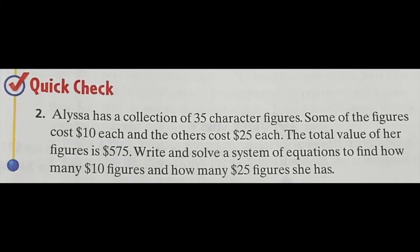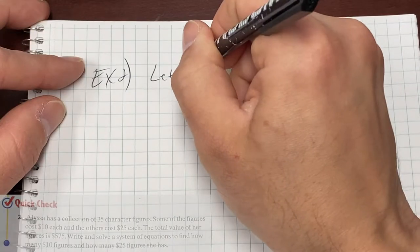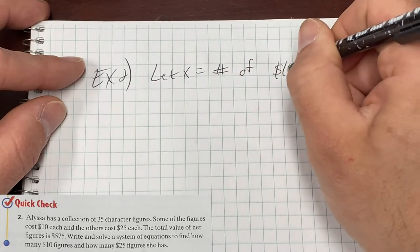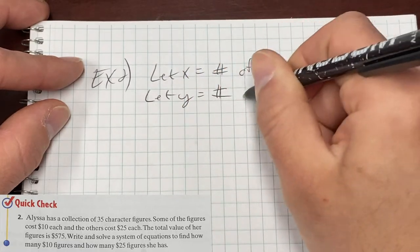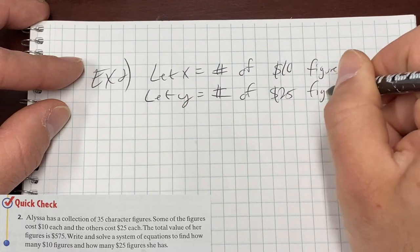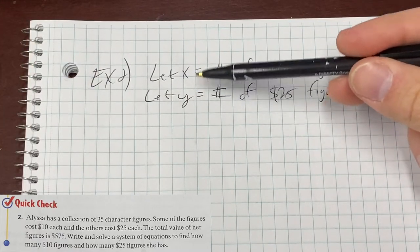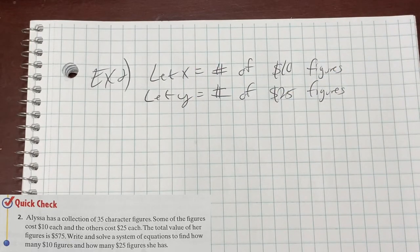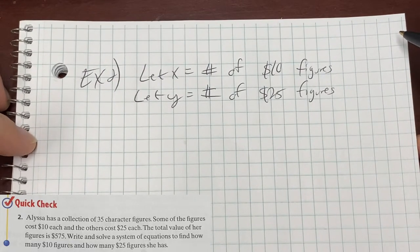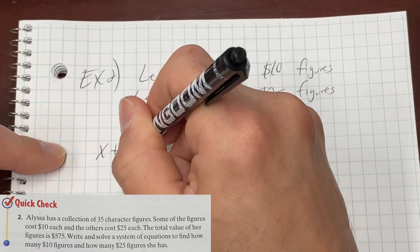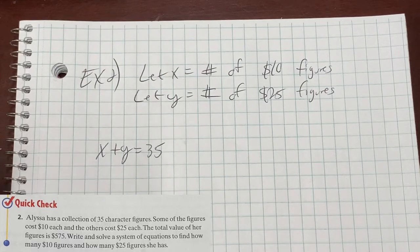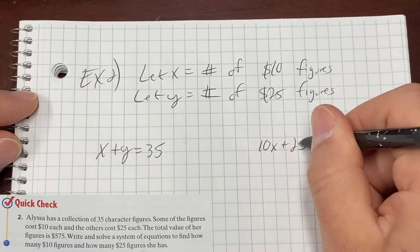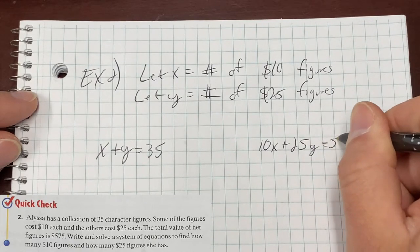Example two here. Alyssa has a collection of 35 character figures. This is just like the coins. Total of 80 coins in the example problem. Total of 35 figures here in this problem. It says some are 10 bucks and some are 25 bucks. Total value of figures is 575. Write and solve a system to find out how many of each she has. Let x equal number of $10 figures. Let y equal number of $25 figures. And really in this problem, this is interchangeable. It doesn't matter which variable you call. You could have said y was the 10s and x was the 25s. So now what are the equations we're going to write? We know how many figures she has. x plus y is 35 figures. And we know the total value. So $10 times x plus $25 times y equals $575.